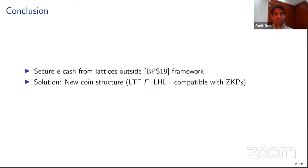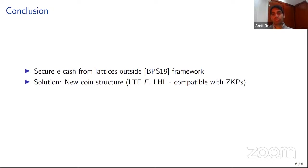In summary, we built a provably secure lattice-based e-cash construction that fundamentally differs from the Bors et al. framework. The solution uses a brand-new coin structure utilizing lossy trapdoor functions and the leftover hash lemma in the security proofs. Additionally, we show our entire construction is compatible with known lattice-based zero-knowledge proofs.